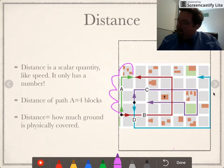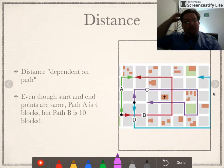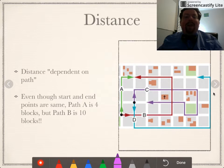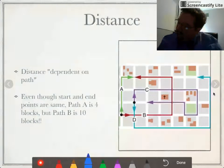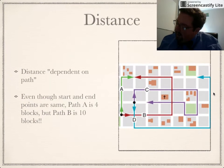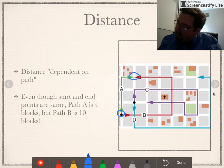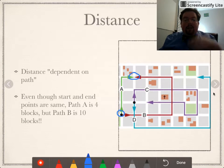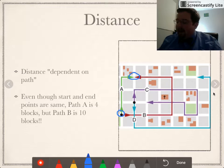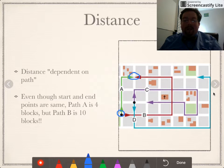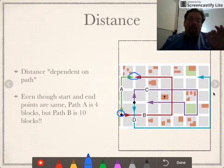One of the phrases we use a lot with distance is that it is path dependent, or dependent on path. Path A and path B both start and finish at the same spots, but which one is longer? Obviously path B — the red line is a lot longer than path A. In fact, if you took the time to count it out, it's about ten blocks, that's six more blocks than path A, but you still got to the same spot — they just took a longer way to get there.